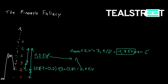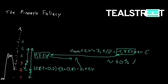Comparing the initial single position to the added position, we get roughly 40% more EV per contract by adding our position here.